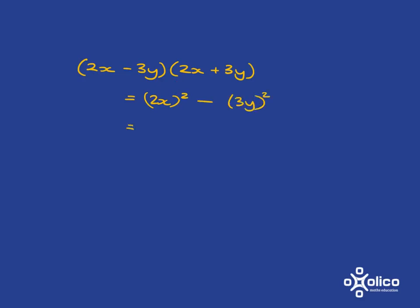And this 2x squared, 2 times 2 is 4, x times x is x squared, 3 times 3 is 9, y times y is y squared. And we don't have any other term because the minus 3y 2x will disappear with the plus 3y 2x.